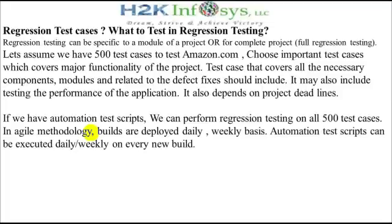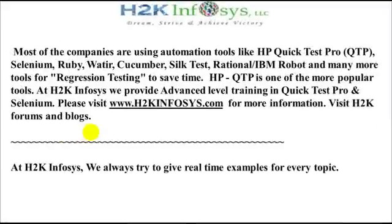Regression testing may also include testing the performance of the application, and it depends on project deadlines. If we have automation test scripts, we can perform regression testing on all 500 test cases. In Agile methodology, automation test scripts can be executed daily or weekly on every new build.